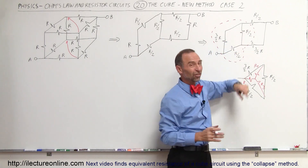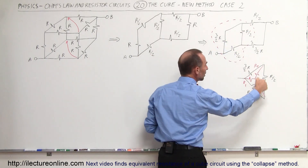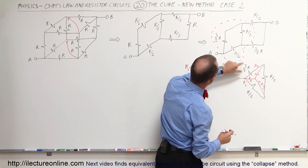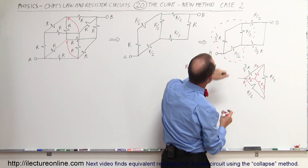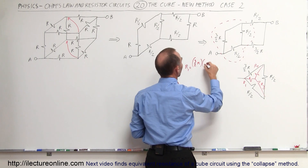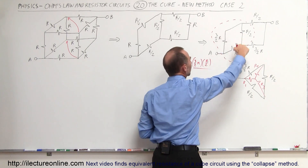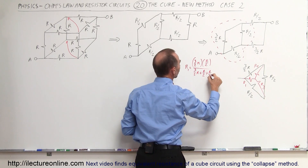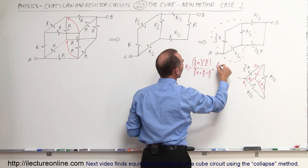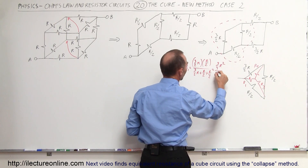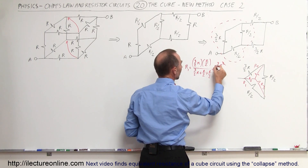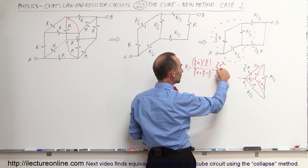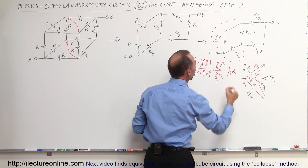When you attach a Y circuit to the last two resistors it's a lot easier to solve. To find the three equivalent Y resistors from the delta circuit: R1 is equal to the product of the two adjacent resistors — so R1's adjacent resistors are 3/2 R times R/2 — divided by the sum of the three resistors in the delta, which is 3/2 R + R/2 + R/2. When we multiply the numerator we get 3/4 R², divided by 5/2 R. The R's cancel, and that simplifies to 3/10 R.